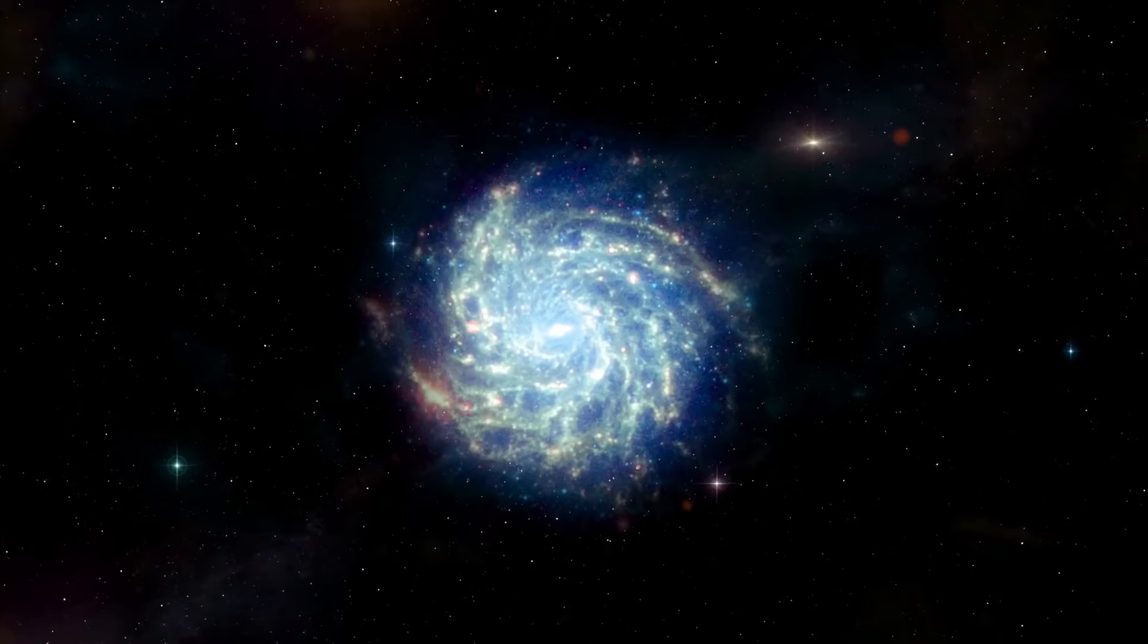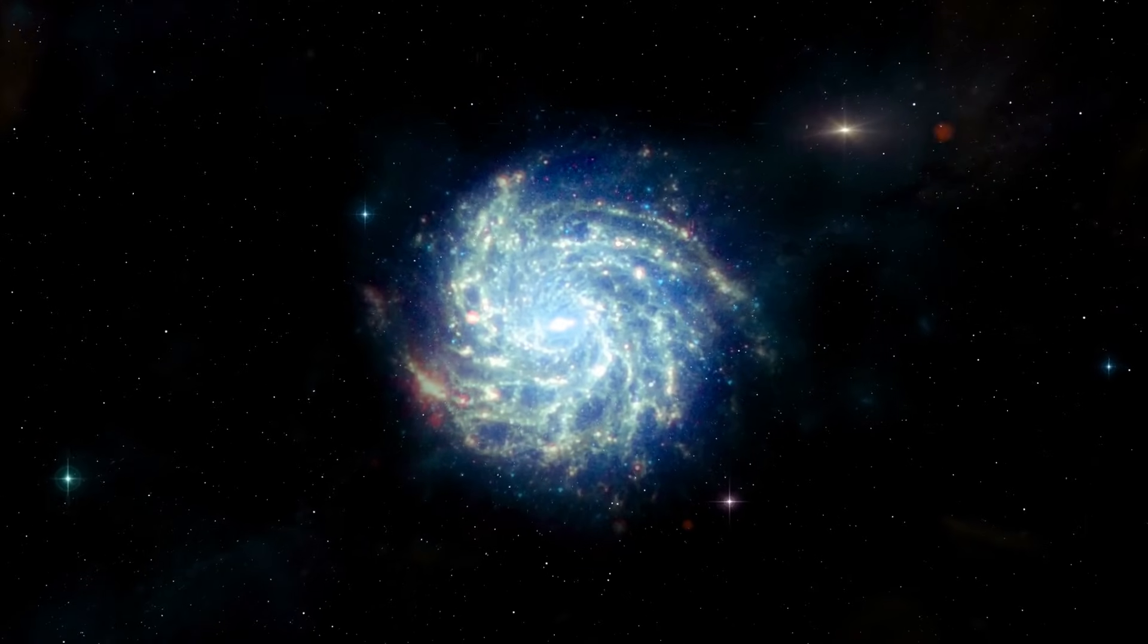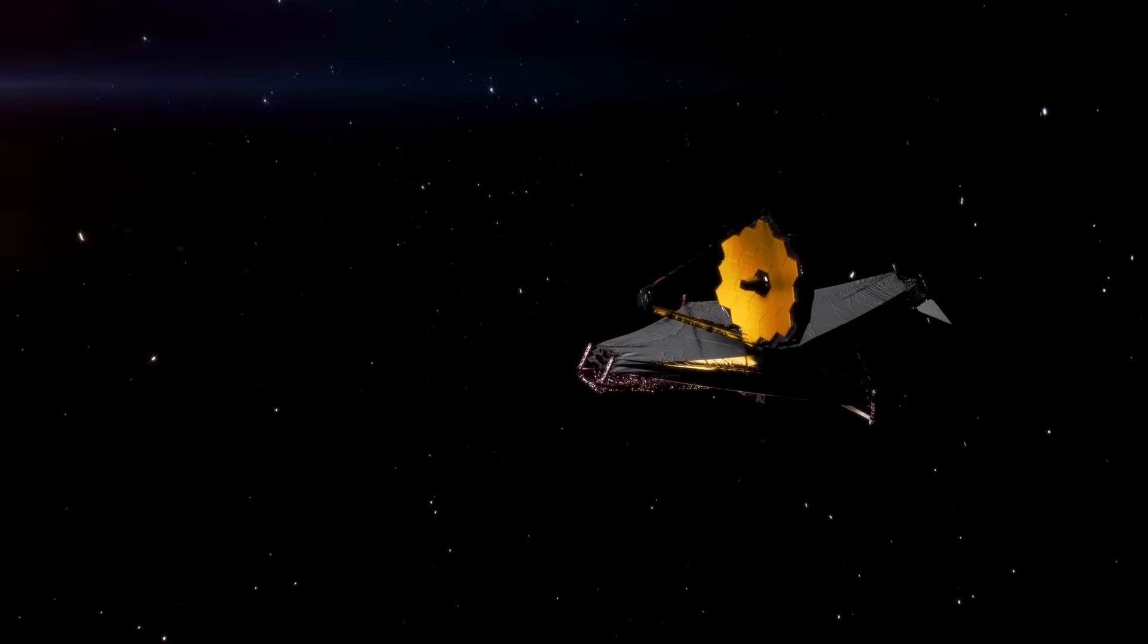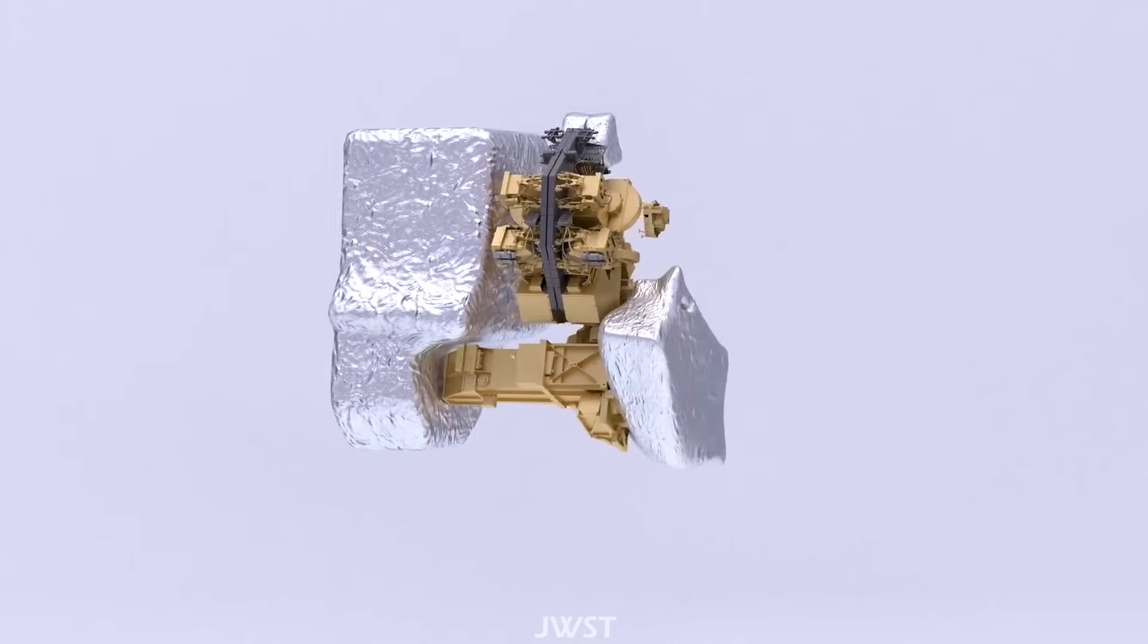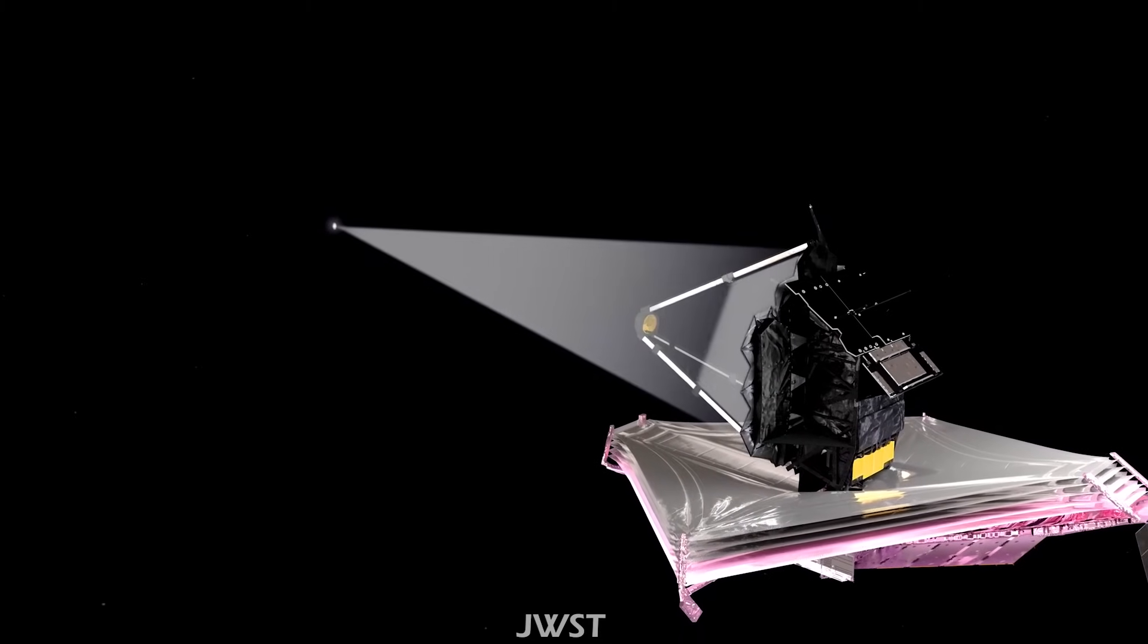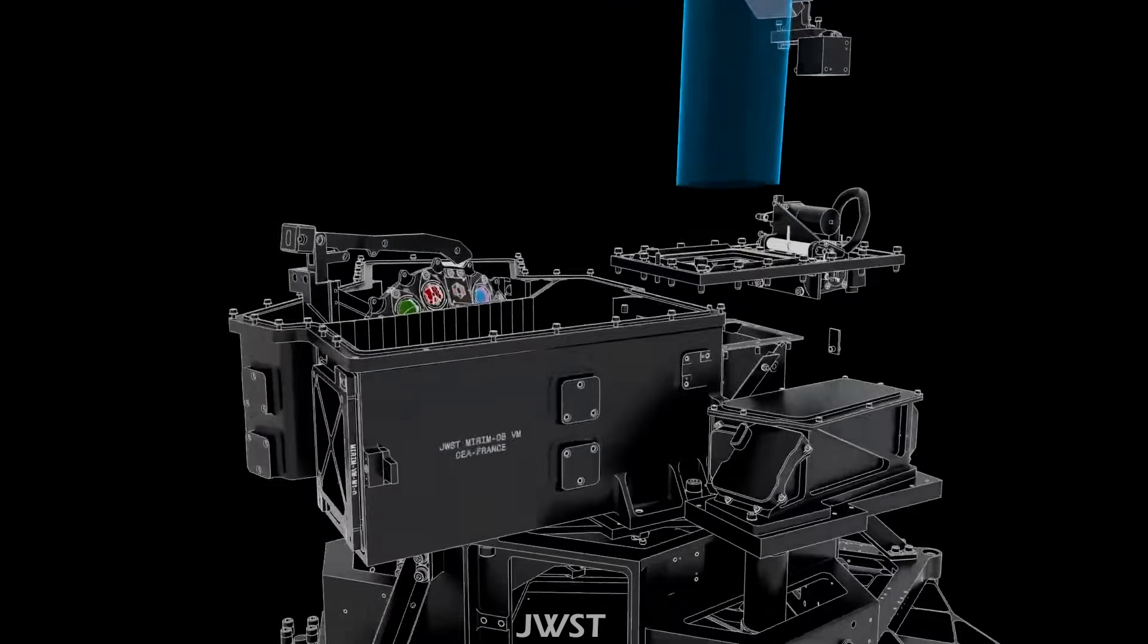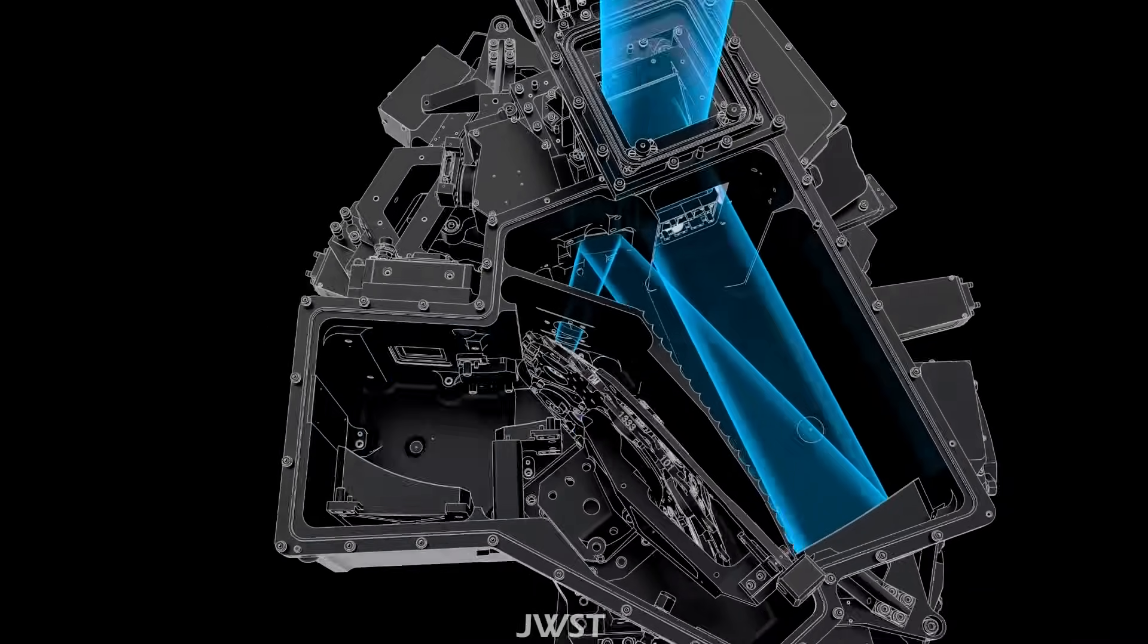Only the light that reaches us determines what is observable. In other words, if an object is located billions of miles away, but its light doesn't reach us, we cannot see that object. This is where the James Webb space telescope excels. Equipped with infrared cameras, it can detect even the most distant objects in the universe. Typically, the light from these remote objects is red-shifted, meaning it is transformed into infrared light. Consequently, only an infrared telescope like the James Webb can capture such objects.